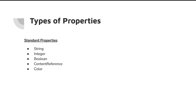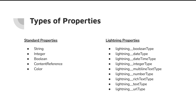You're probably familiar with the standard properties: string, integer, boolean, content reference, and color. You can do quite a bit with these. But with some of the new lightning property types, we can see we now also have date, datetime, integer, multi-line text, number, rich text, text, and URL. These new standard lightning properties give us much more flexibility. For example, you no longer need to use a string to let the user input a URL — you can use a URL type, which gives you the validation you absolutely need.